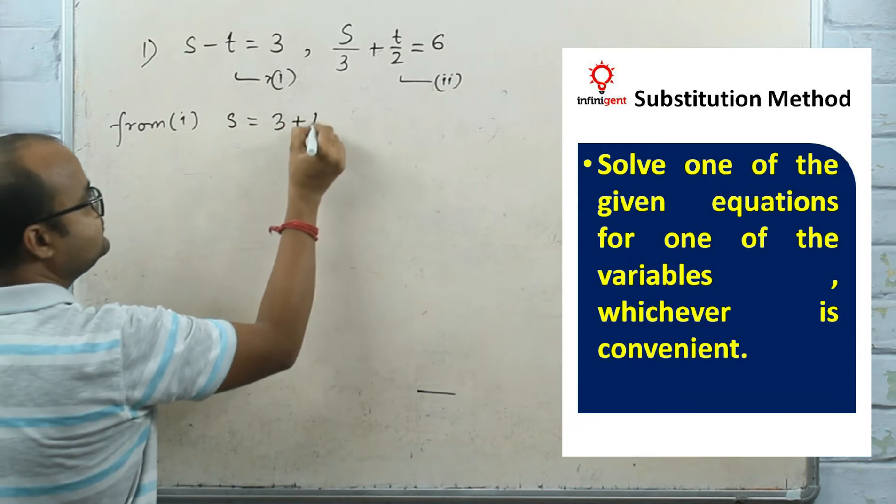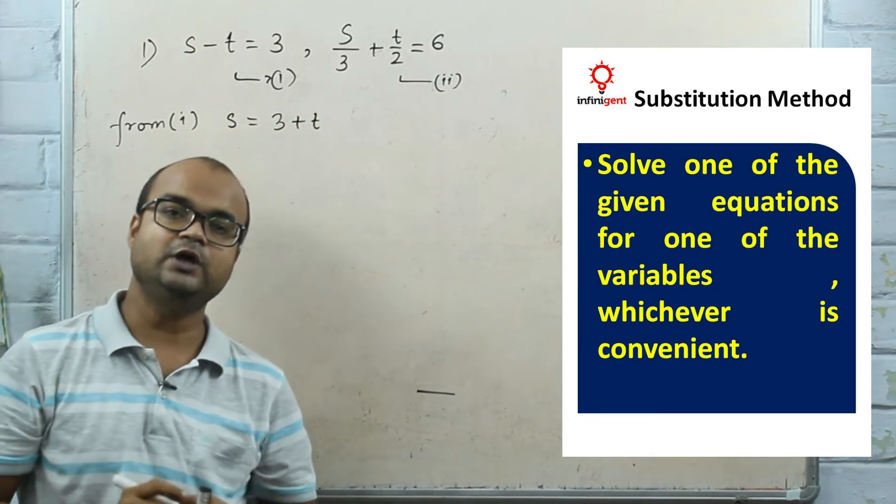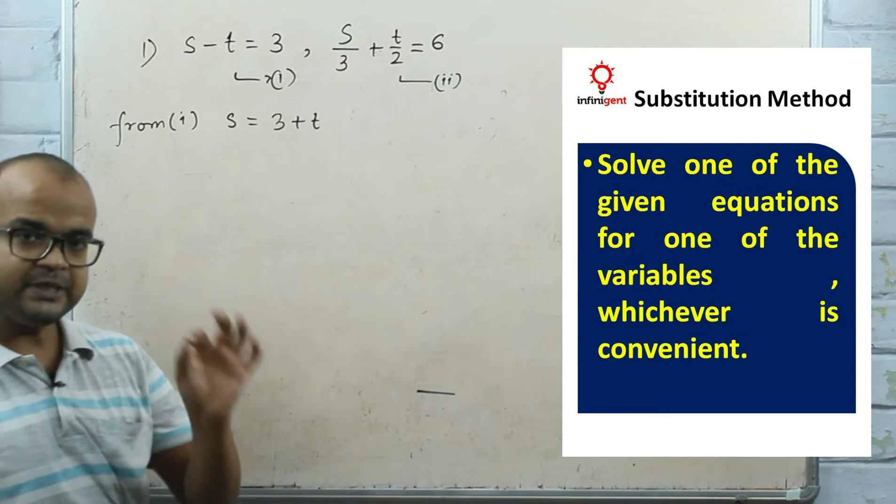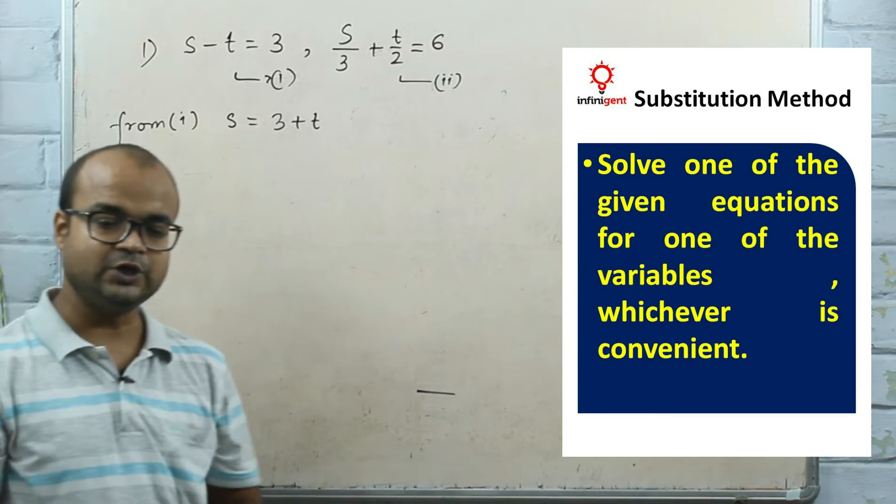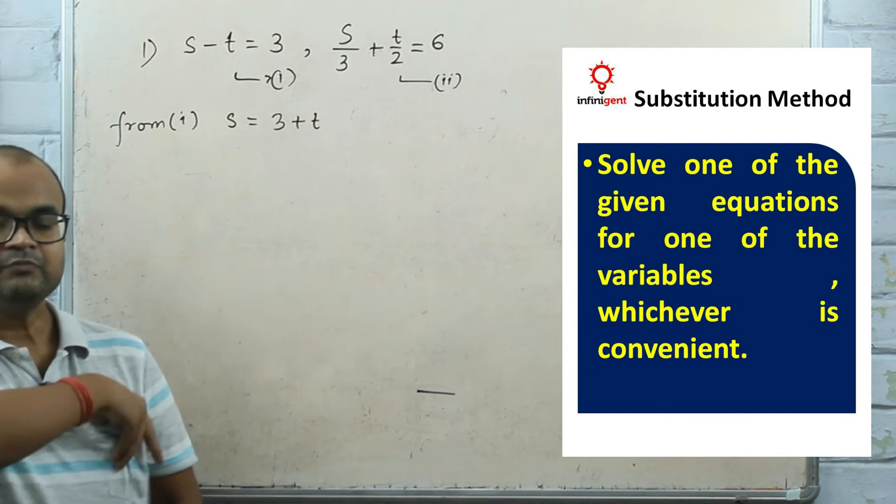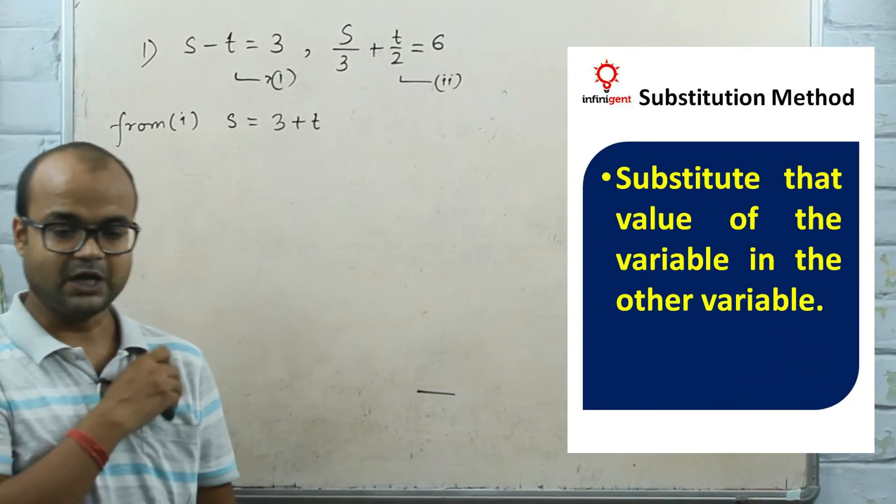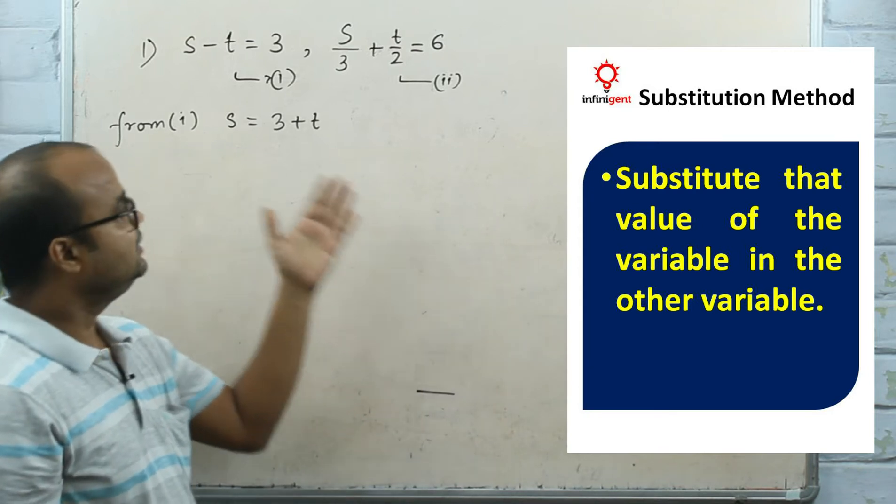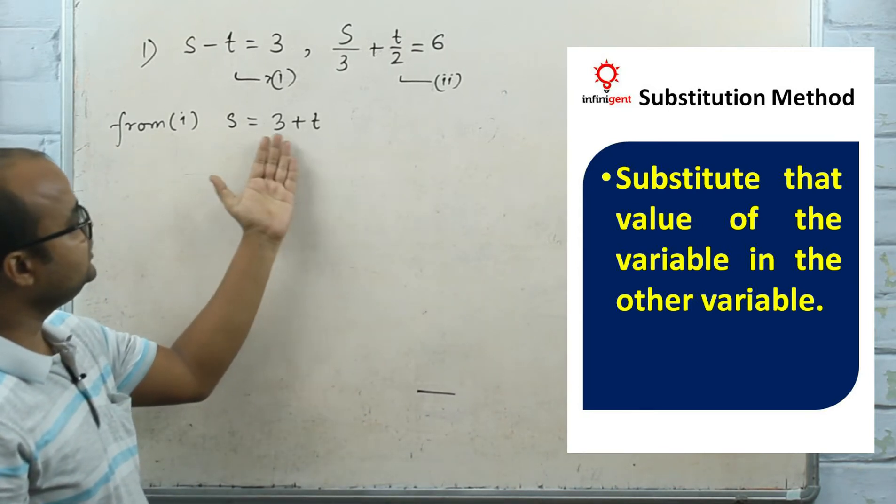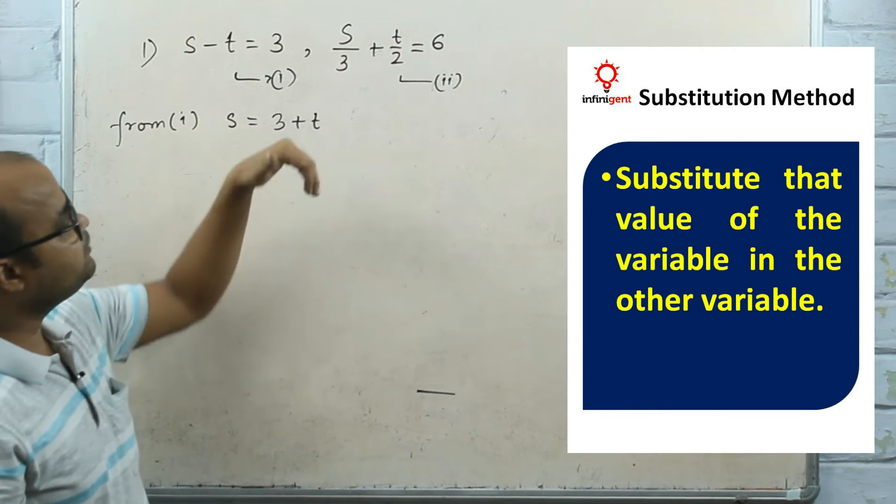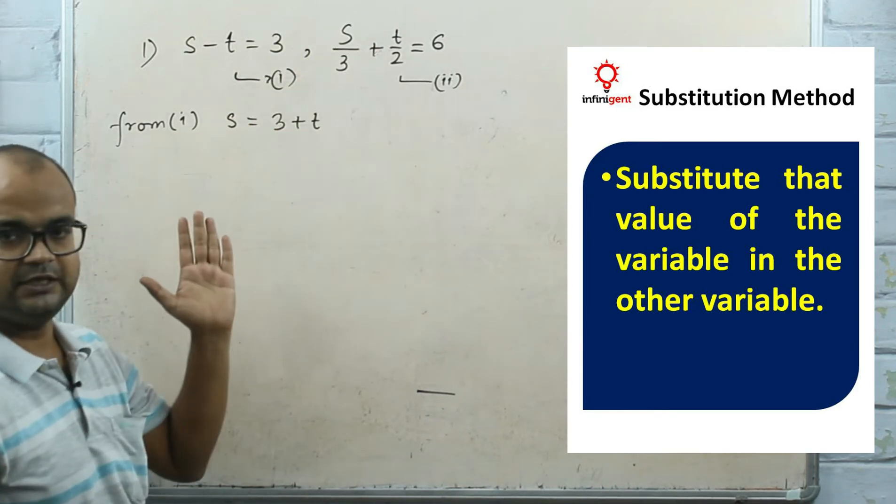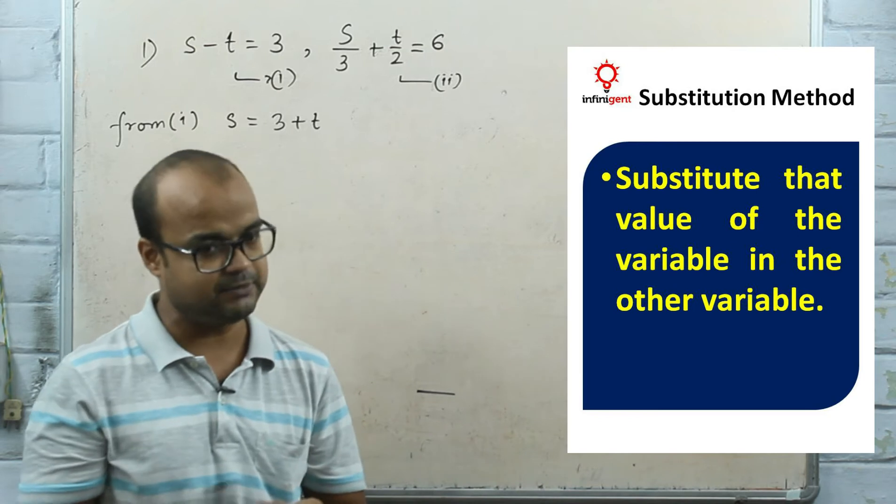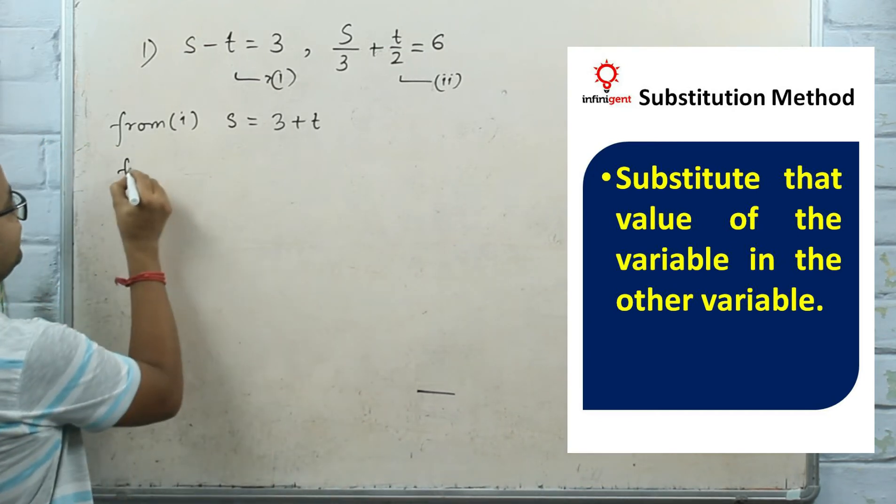The first step is that you use one equation and express a variable in terms of the other variable. Moving to the next part, you substitute that value of the variable in the other equation, which reduces it to a linear equation of one variable.